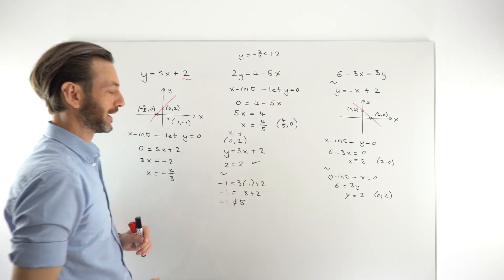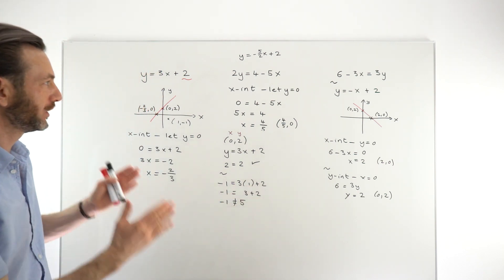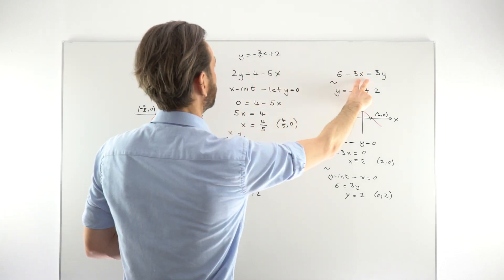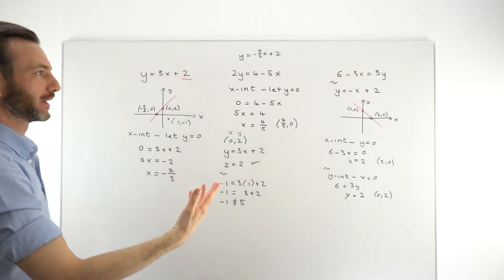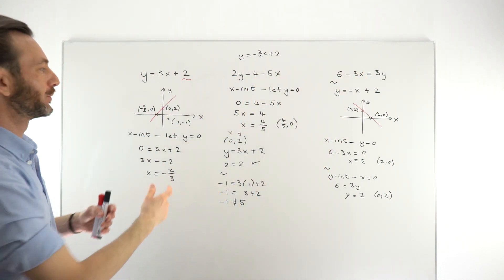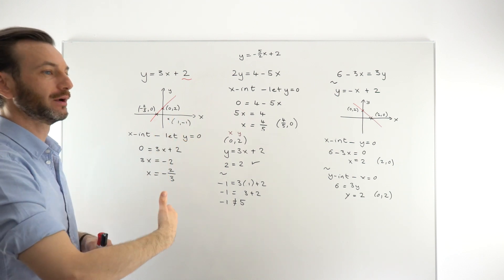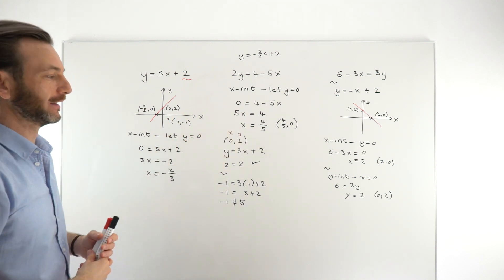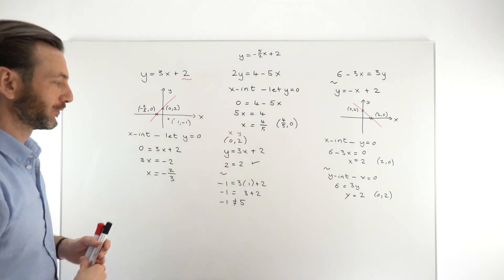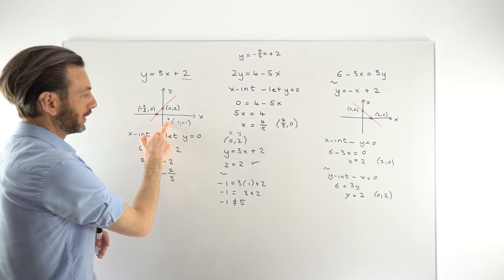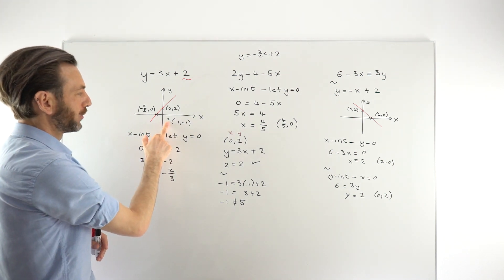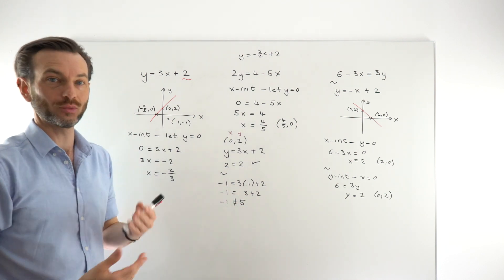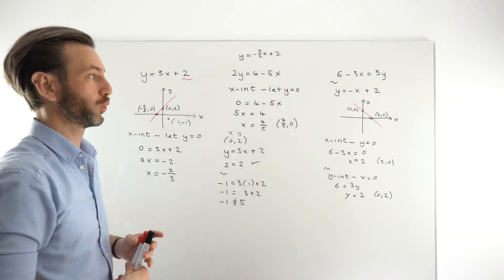Points that lie on a line satisfy the equation of the line with their x and y coordinates. Points that don't lie on the line don't satisfy the equation. That's what the equations of lines are — they're formulas that validate whether points lie on the line or not, the recipe that gives you all the points on the line. If you're ever asked to check whether a point lies on a line, just substitute it into the equation and test whether the equation works.